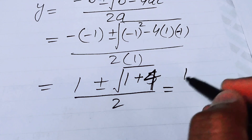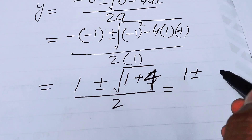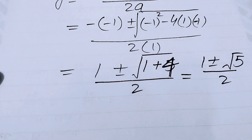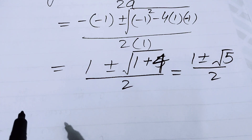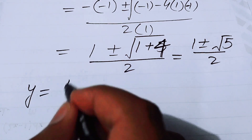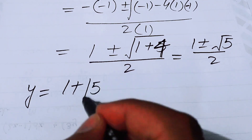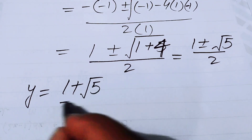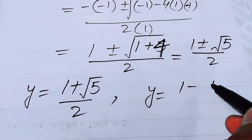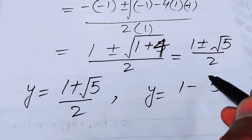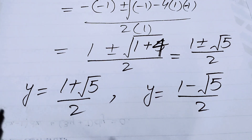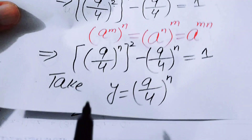We have two cases: y equals (1 + √5)/2, and y equals (1 − √5)/2.